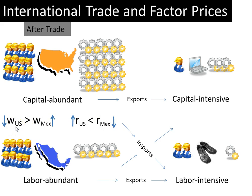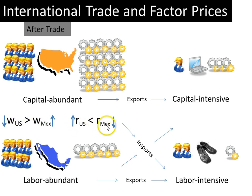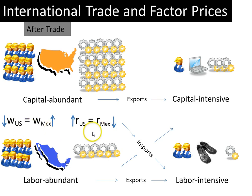Recall that wages in the U.S. were higher than wages in Mexico. After trade, wages in the U.S. are falling and wages in Mexico are rising, meaning the gap between wages in the U.S. and Mexico will become smaller over time. Similarly, the gap between the real interest rate in the U.S. and Mexico will also become smaller. If there is complete free trade with little or no transportation costs, free trade will actually eliminate the gap between wages and the gap between real interest rates in the U.S. and Mexico, resulting in equality.